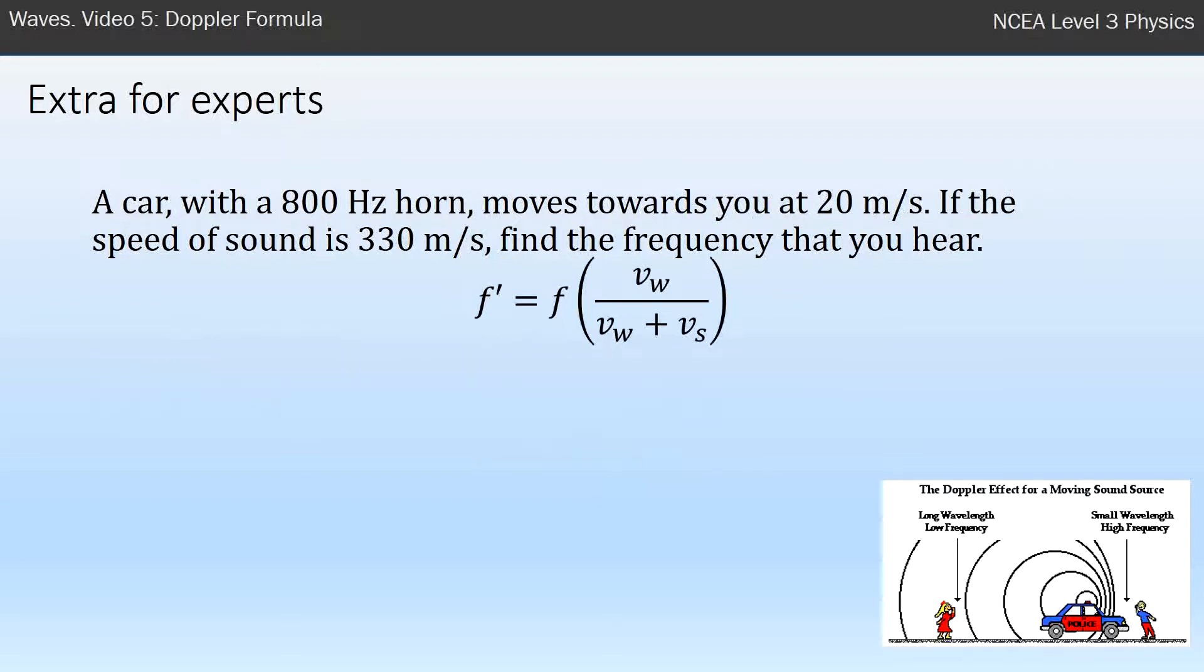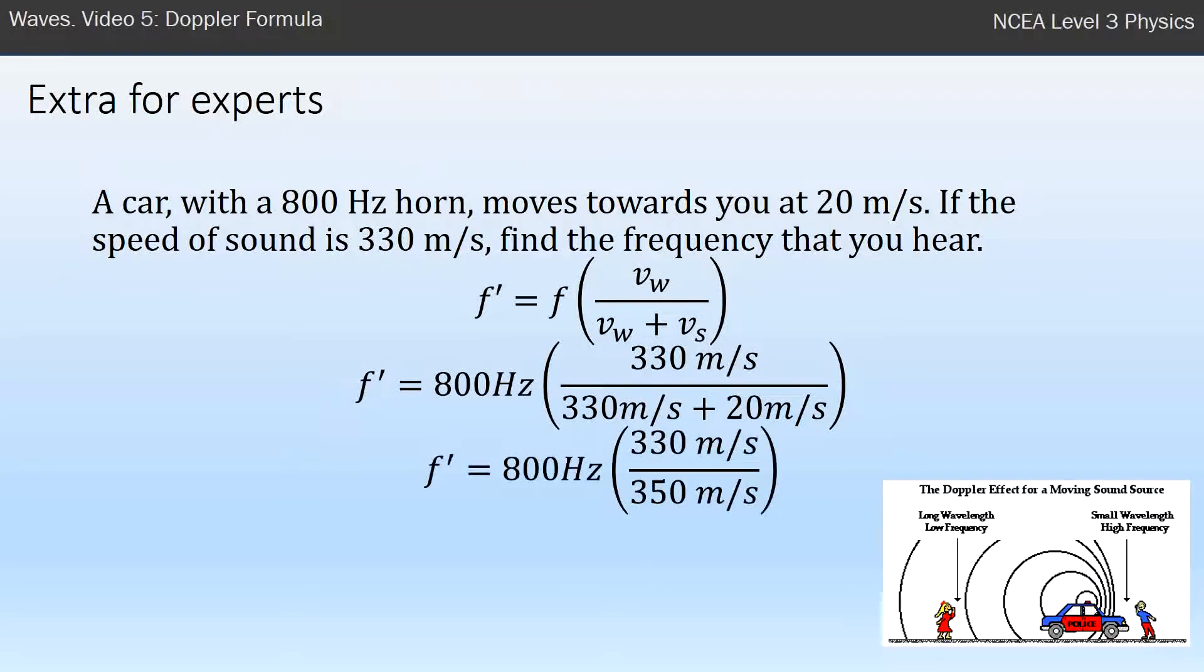You then put the numbers in, 330 plus 20 this time, and you notice when you simplify it now you've got a larger number on the bottom of the fraction, and when you divide this you get an overall smaller frequency. So frequency is down to now 754.